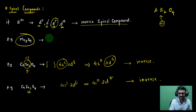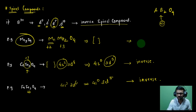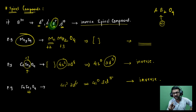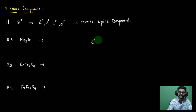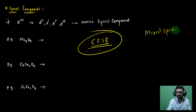For Mn₃O₄, we can rewrite it as Mn(Mn₂)O₄. Now predict the spinel type by looking at Mn in +3 oxidation state and checking its electronic configuration. A detailed video using Crystal Field Stabilization Energy (CFSE) will be made to show how to rigorously predict normal versus inverse spinel compounds.